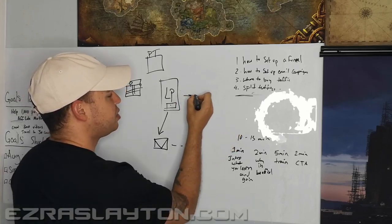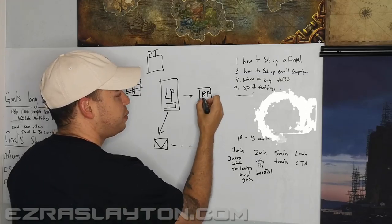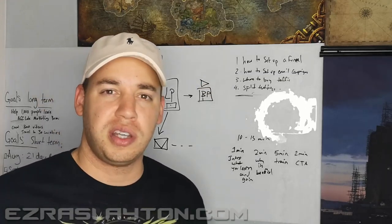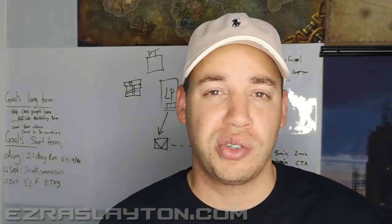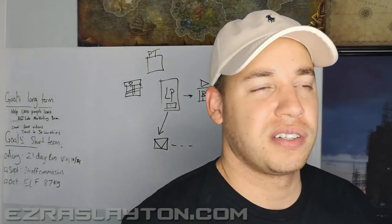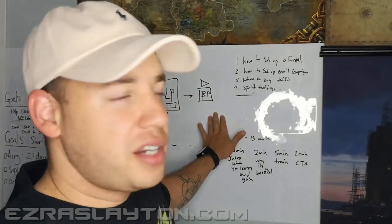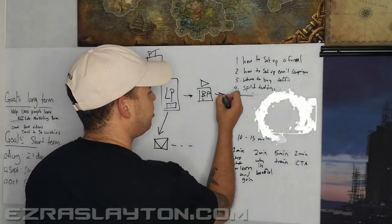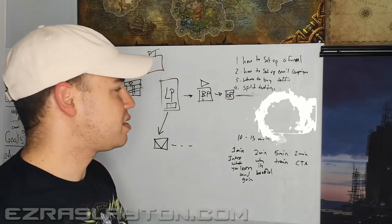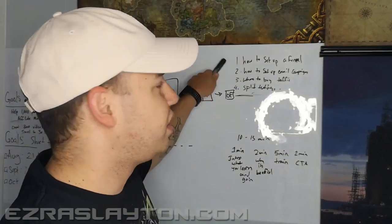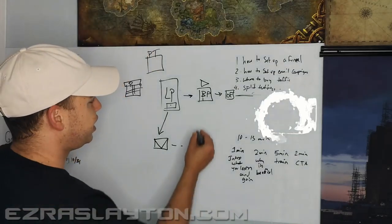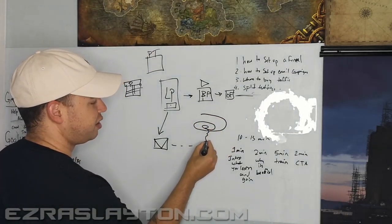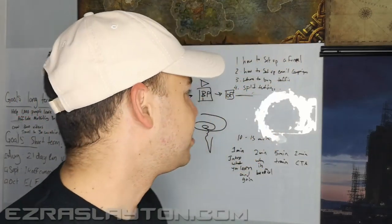After the landing page we send them to a bridge page. On the bridge page there's a video talking about our story and giving some insight into what to expect if they decide to join. From the bridge page they go to our offer. This whole funnel — traffic comes in at the landing page, then the bridge page, then the offer — takes them all the way down through the buying decision.